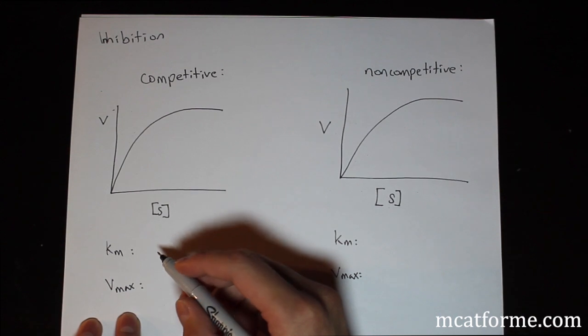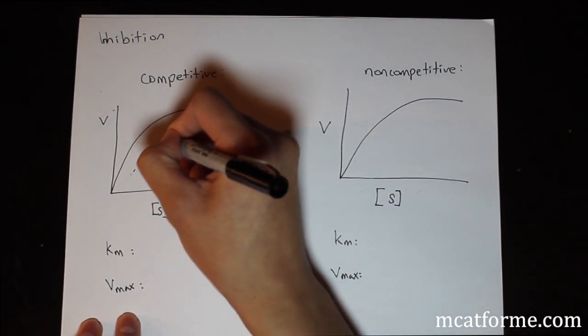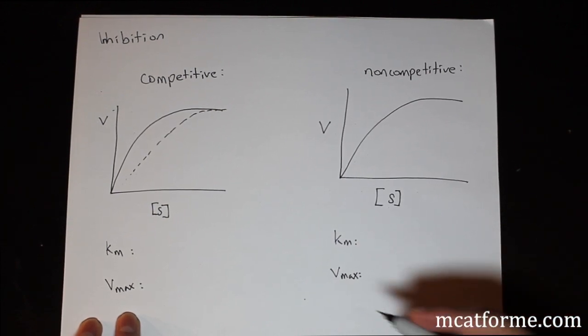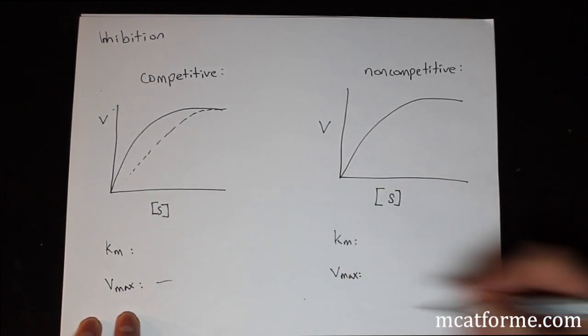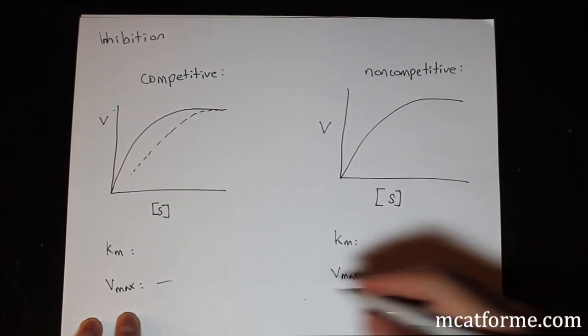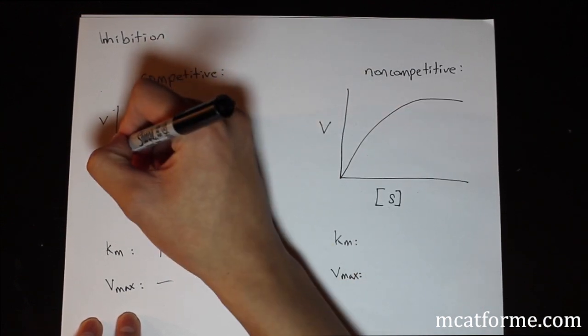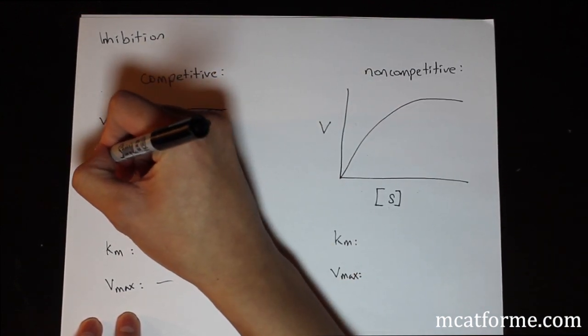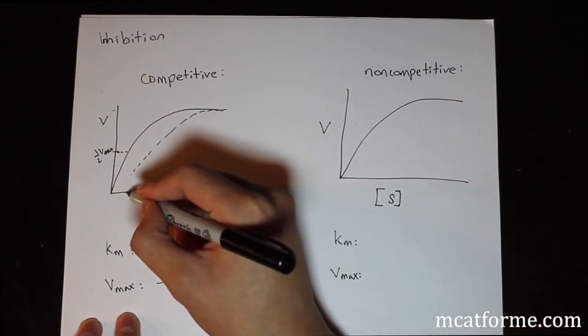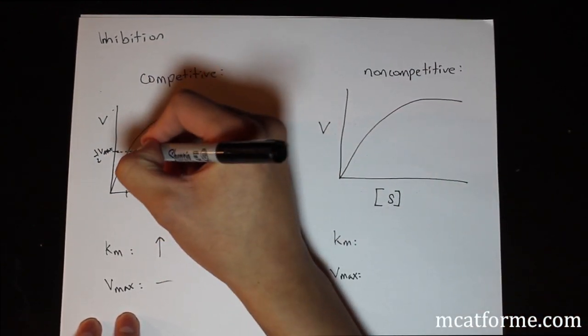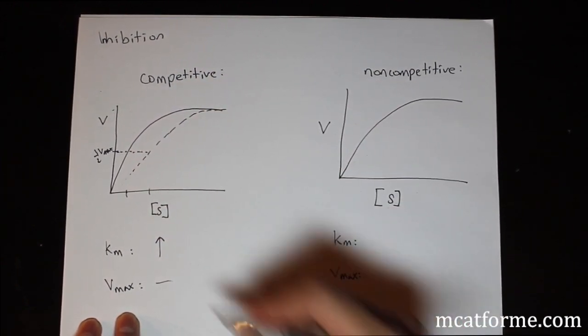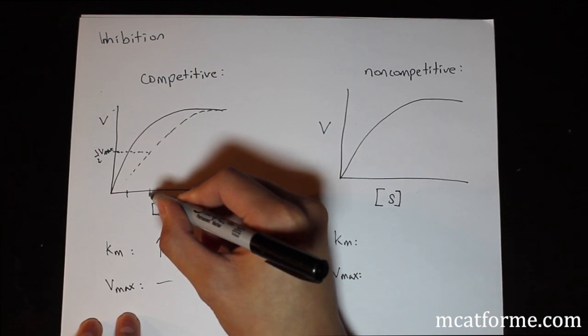What would it look like if we had a competitive inhibitor? Well, it would look something like this. So what this is saying is that Vmax, what has it done? Well, nothing. It didn't change at all. We're still at the same Vmax. What happened to Km? Well, it increased. Our 1/2 Vmax is always going to be right here. For the normal curve, our Km was right here. But then for our inhibited one, our Km would be all the way over here. So that's why the inhibited Km increased.